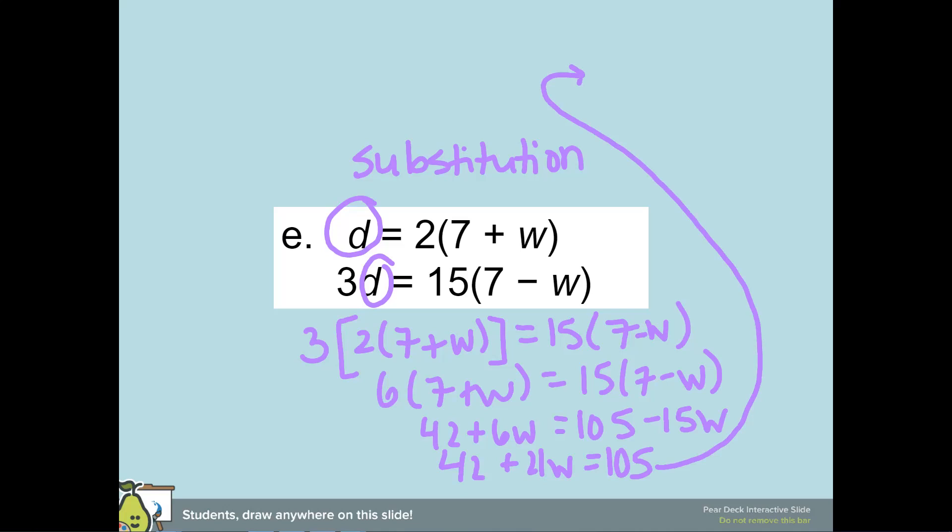I'm going to subtract 42 from both sides, so 21w is equal to—and 105 minus 42 is 63.